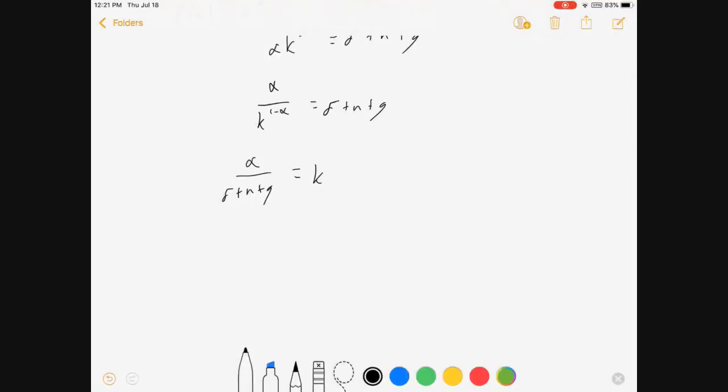So, I'm going to move that piece over. I'm going to divide both sides by delta plus n plus g. And multiply both sides by k to the 1 minus alpha. And I get this. And then I can mess with my exponents. And there's my golden rule level of capital.